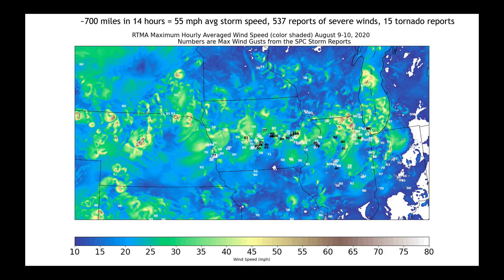That map you see here is looking at two different things. The color coding in the background is from the RTMA dataset — it gives us the maximum hourly average winds, so not gusts, but hourly averaged winds. This is how we get the idea that the storm system was moving along somewhere between 40 and 60 miles an hour at times. Overlaid on top of that are the severe wind reports, ranging from 60 miles an hour in some locations up to 90 to 110 miles an hour.